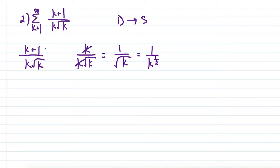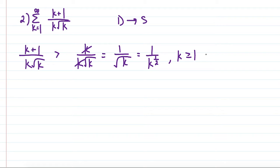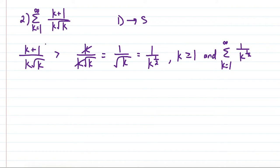To decrease the value of a fraction, you can make the numerator smaller or the denominator bigger. Subtracting one from the numerator gives a smaller expression, and this is true for k ≥ 1 since that corresponds to the start of the series. We then place the resulting expression in the series from 1 to infinity: the series of 1 over k^(1/2). Since this resulting expression is smaller and we know this p-series is divergent, by the comparison test the original series is going to diverge as well.